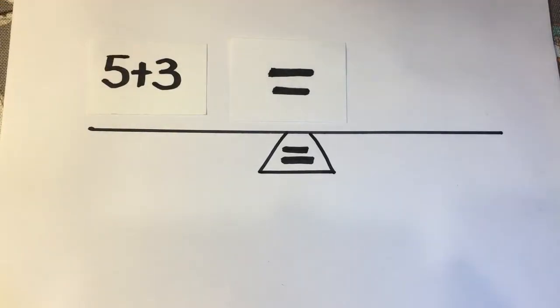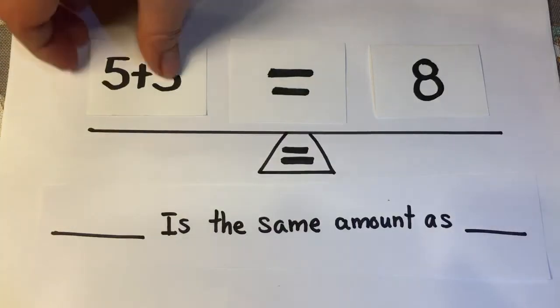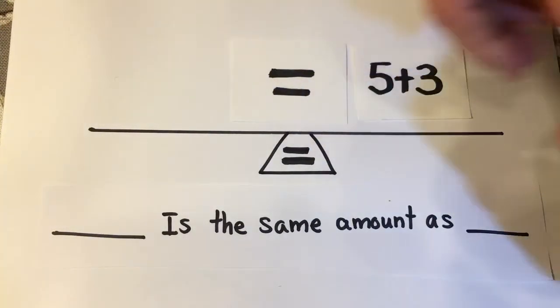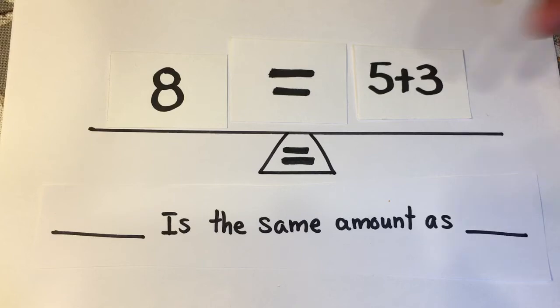We are used to seeing the equal sign used with the other numbers in this type of order. But because what it really means is the same amount as, 8 is the same amount as the sum of 5 and 3.